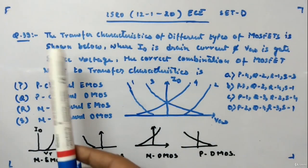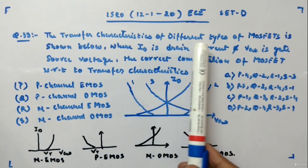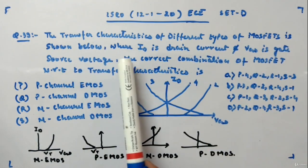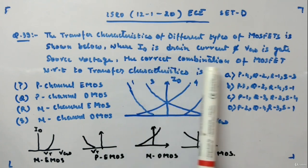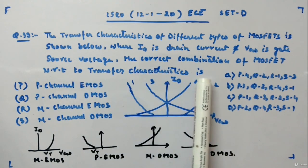Okay, question 39. It is given that the transfer characteristics of different types of MOSFETs is shown below, where ID is drain current and VGS is gate source voltage. The correct combination of MOSFET with respect to transfer characteristics is...